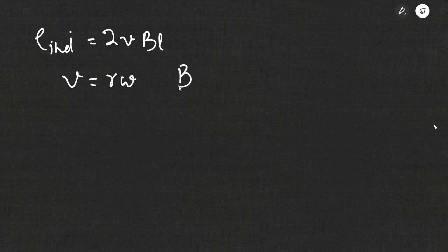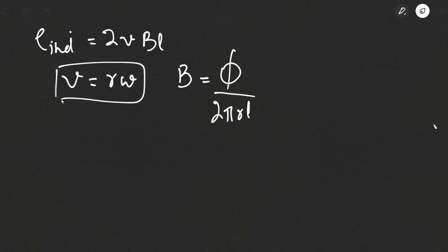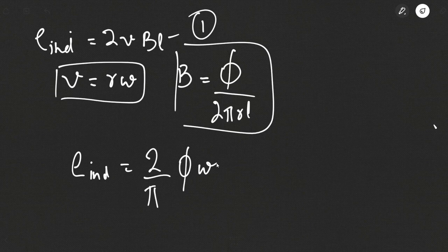We know that B can be represented in terms of flux and area, where B equals flux divided by area, and area will be 2πrL. Substituting the values of V equal to rω and B equal to φ divided by 2πrL into this equation, we get E induced equal to 2/π × φ × ω. This is the induced voltage that will be available to us at the ends of the rotating loop.